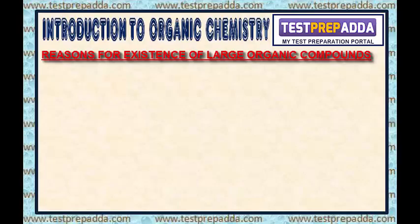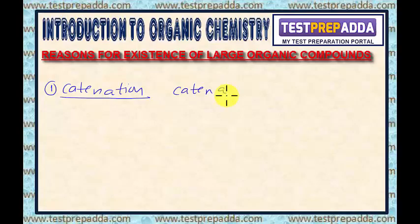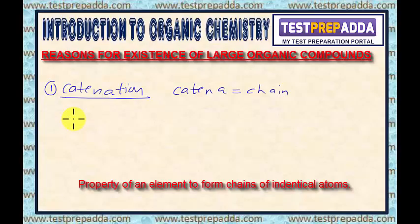The first reason is catenation. Catenation is derived from a Latin word 'catena' which means chain. Catenation is defined as the property of an element to form chains of identical atoms, and this catenation is observed in case of non-metals showing covalency of two or more.